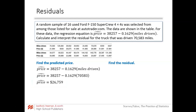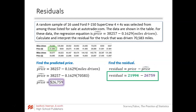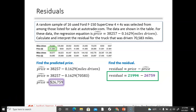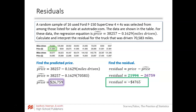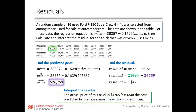Now we find the residual. We actually know the actual price of the truck from the data. The actual price was $21,994 minus the predicted price from the regression equation. The residual is negative $4,765. Signs are important, so watch your signs. The actual price of this truck is $4,765 less than the cost predicted by the regression equation for a truck driven that number of miles.